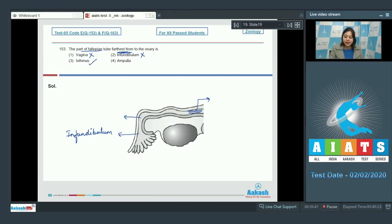Number 3. Isthmus is the correct answer as isthmus is the part of fallopian tube which joins the fallopian tube with the uterus. Number 4. Ampulla. This part of fallopian tube, the wide part, is the ampulla. So the farthest part of fallopian tube from the point of attachment of ovary is isthmus.